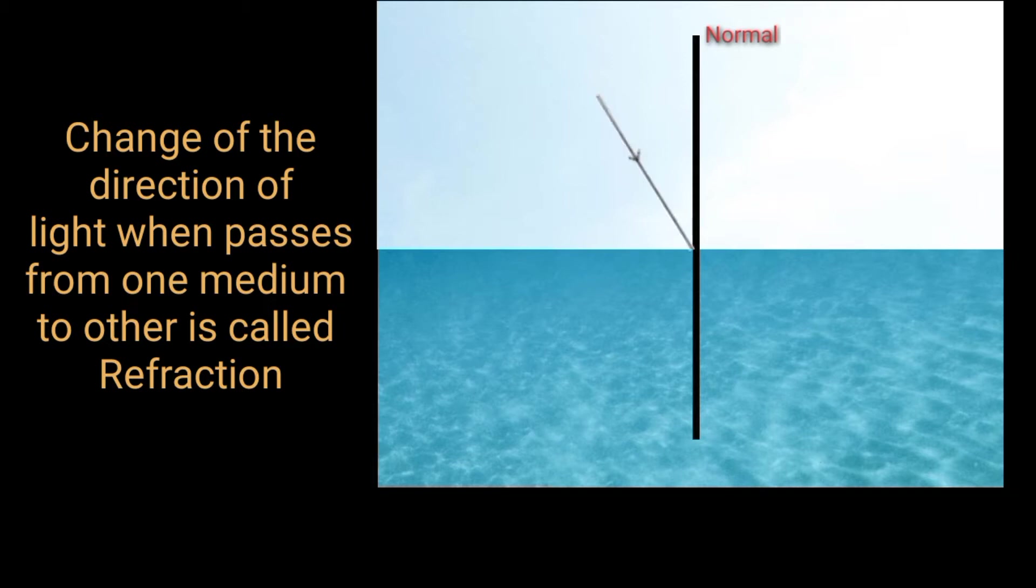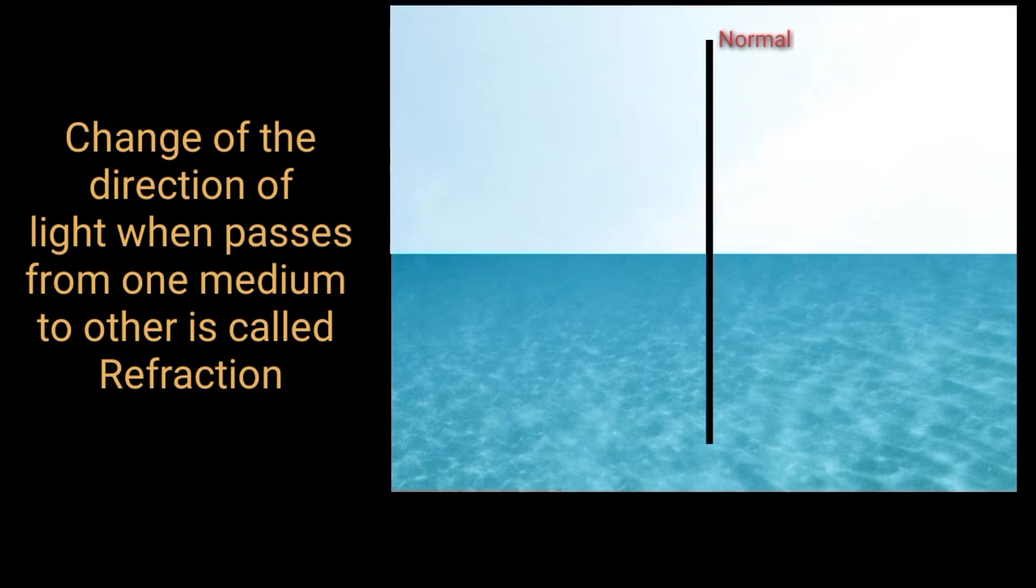If a light ray enters from a rarer medium to a denser medium, then the refracted ray moves towards the normal drawn at the interface separating the two media. When it travels from denser medium to rarer, it bends away from the normal.